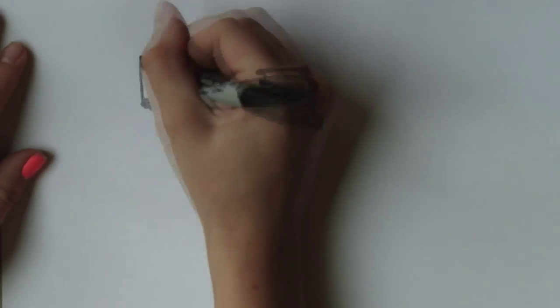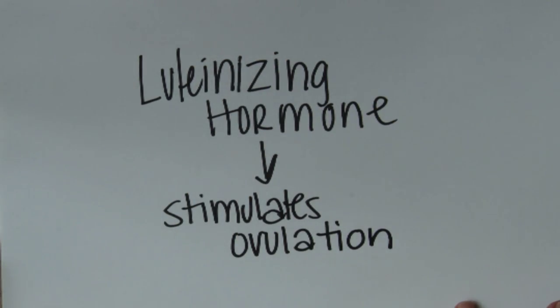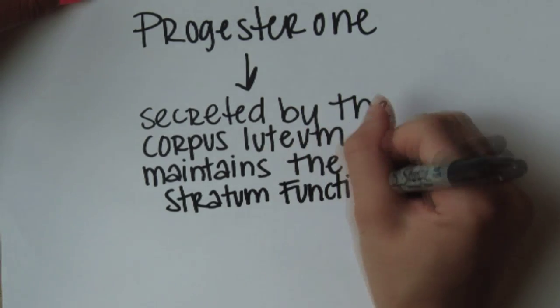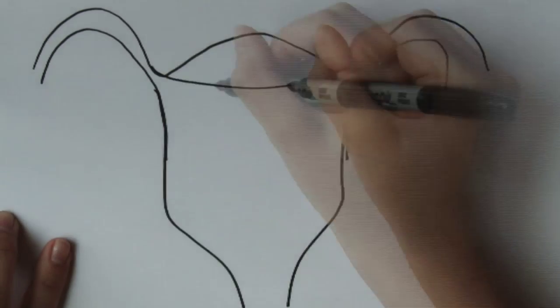Halfway through the cycle, luteinizing hormone will trigger ovulation, the release of the egg from the follicle. The follicle will then become the corpus luteum, and the corpus luteum will secrete progesterone, which helps to maintain the stratum functionalis. A drop in estrogen and progesterone levels will trigger menstruation.